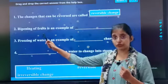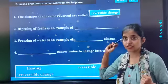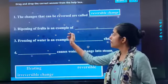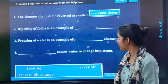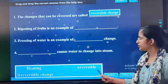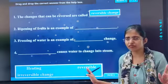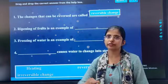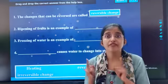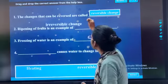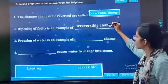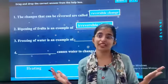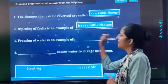But see, then ripening of fruit is an example of dash. Ripening of fruit, when raw mango becomes sweet mango, what type of change is this? Come on. Ripening of fruit is an example of which type of change? Irreversible change, reversible change, or heating. Heating is not there. So I am taking my answer and I am dropping it here. Irreversible change. Good work. And that is why it is the irreversible change.